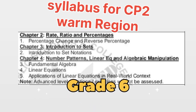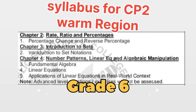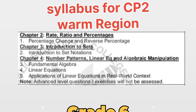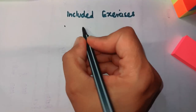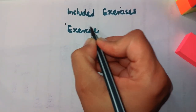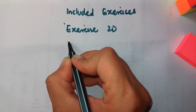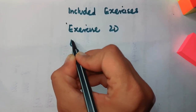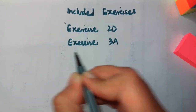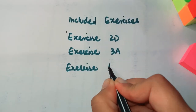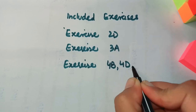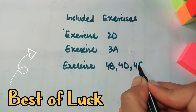Dear students, in these concepts ke andar jo exercises include hain: from chapter number 2 we have exercise 2D, from chapter number 3 we have exercise 3A, and from chapter number 4 we have exercises 4B, 4D, and 4F.